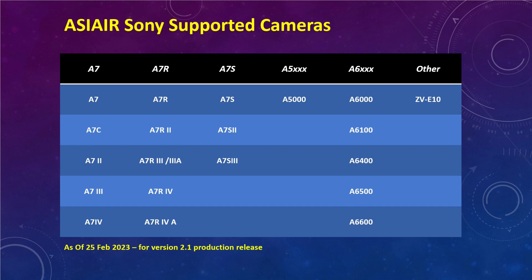Currently supported and tested are the A7, the smaller A7C, the full-frame A7 series models — specifically the A7 II, the A7 III, and the A7 IV. For the S series, the A7S, A7S II, and A7S III are supported. In the smaller APS-C series, the A5000, A6000, A6100, A6400, A6500, and A6600 are all supported. Also on the list is the little APS-C size ZVE-10.